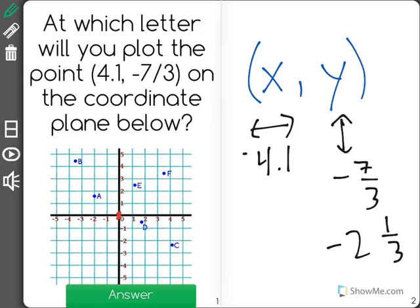So our x value is positive 4.1, meaning we'll move to the right 4, and then just 1 tenth more than that, so just right there.